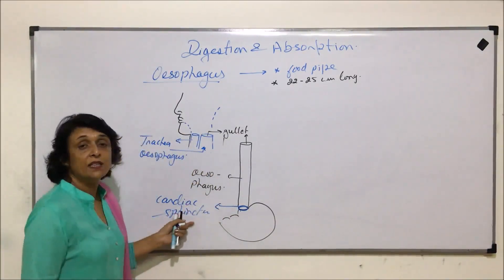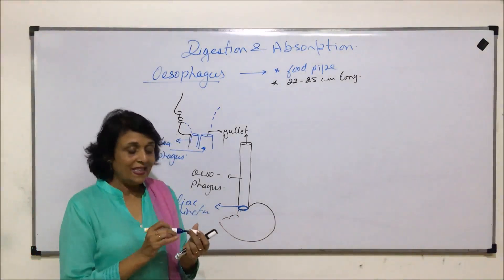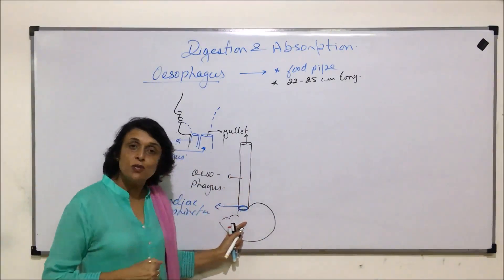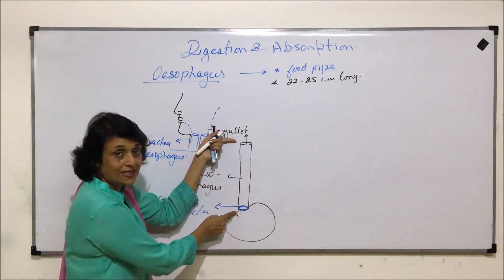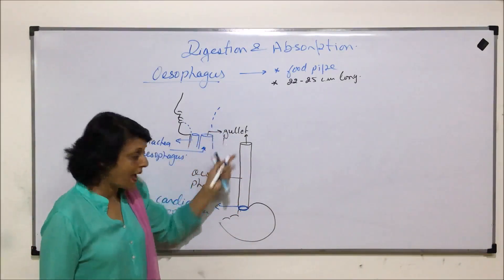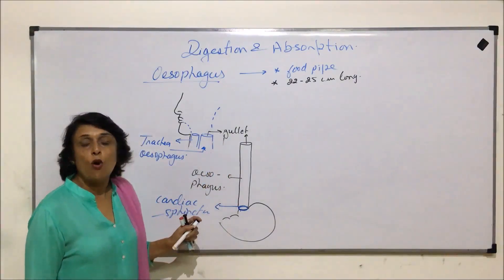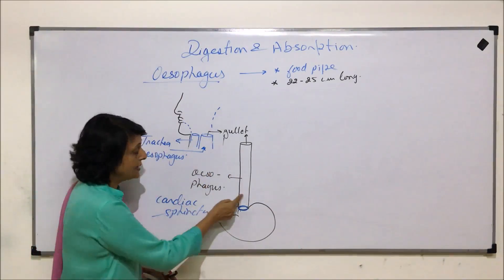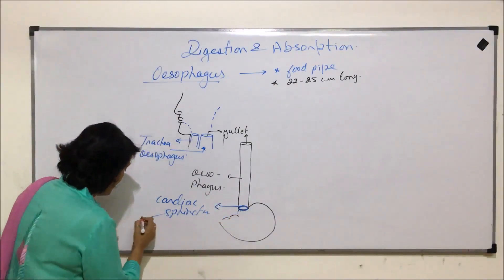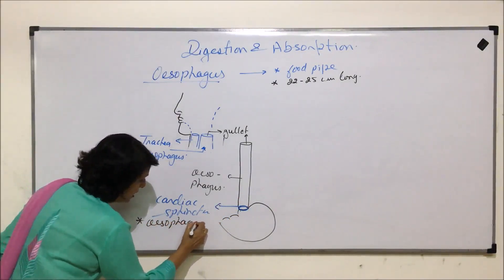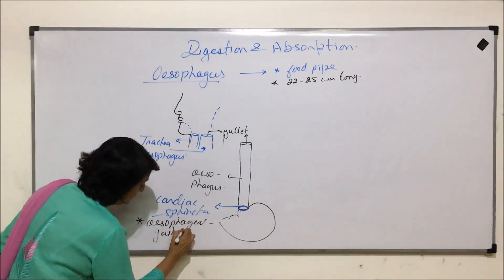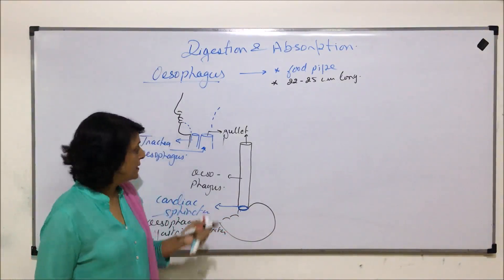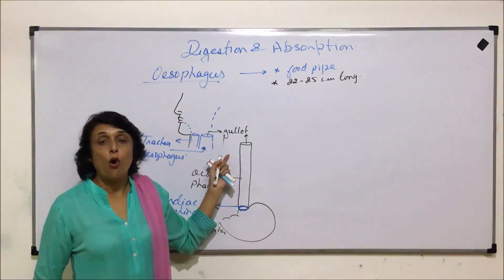The cardiac sphincter is a circular muscle. Normally these circular muscles remain closed; when we swallow, they open and the food actually comes into the stomach. So this tube has two openings: the upper opening is the gullet, and the lower opening is guarded by the cardiac sphincter. It is also known as the esophageal gastric opening, and this sphincter can also be termed the esophageal gastric sphincter.